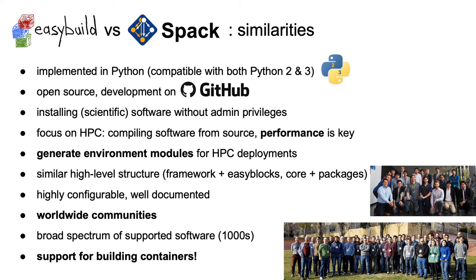EasyBuild and SPAC are quite similar in many ways. Both are open source tools implemented in Python and actively developed on GitHub. The main purpose is installing scientific software without using admin privileges, and there is a strong focus on HPC systems and performance. Both projects have a similar internal structure and are highly configurable and well documented. EasyBuild and SPAC are used and developed by a worldwide community, and both provide support for building container images as well.